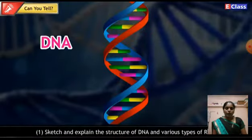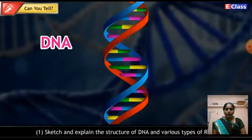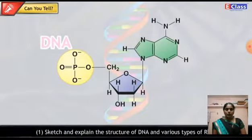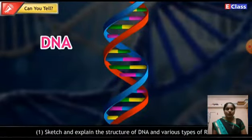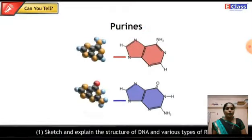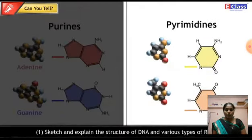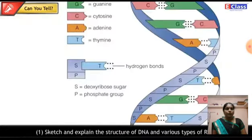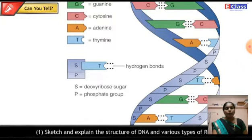A DNA molecule has a double helix consisting of two strands. Each strand of the helix is made up of nucleotides. Each nucleotide is made up of phosphoric acid, deoxyribose sugar, and nitrogenous bases. Nitrogenous bases are of two types: purines and pyrimidines. The purines are of two types: adenine and guanine. Pyrimidines are also of two types: cytosine and thymine. Adenine always pairs with thymine via a double hydrogen bond, while cytosine always pairs with guanine via a triple bond. The helix remains bound due to these hydrogen bonds.